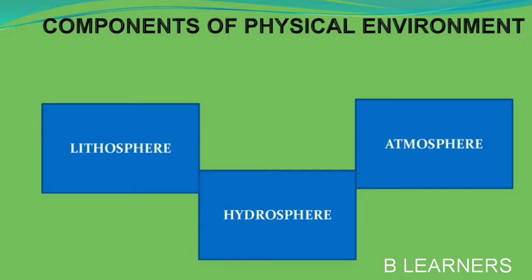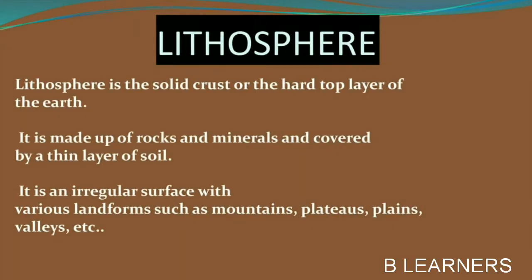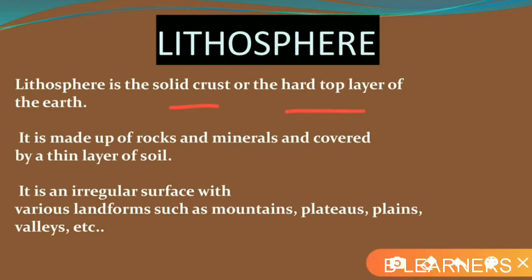We will first discuss about the lithosphere. The word 'lithos' means rocks, so lithosphere means the surface of the earth which is covered with rocks and soil. When rocks break into fine particles and humus is added to make it more fertile, it becomes soil. So the earth is covered with rocks and soil, and that area is considered the lithosphere. The lithosphere is the solid crust — it is hard and made up of rocks.